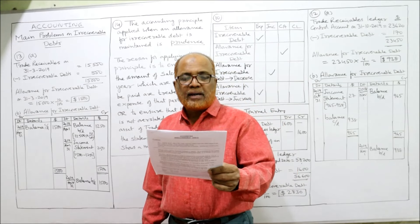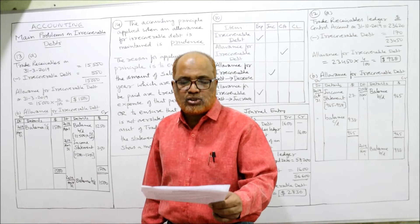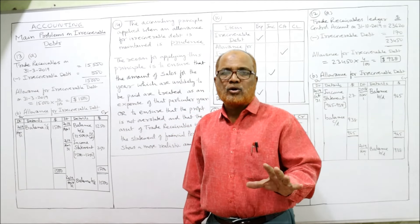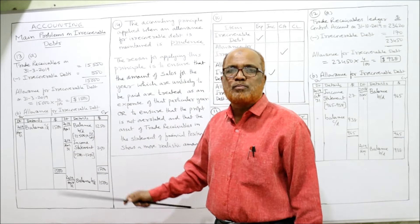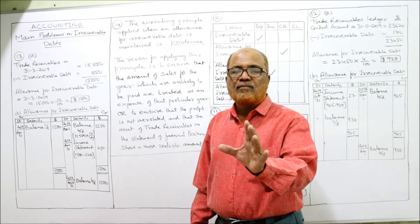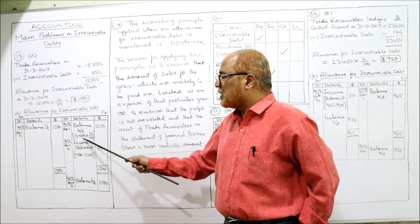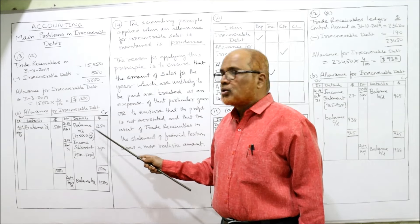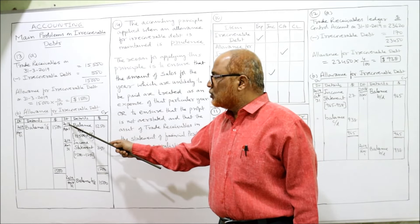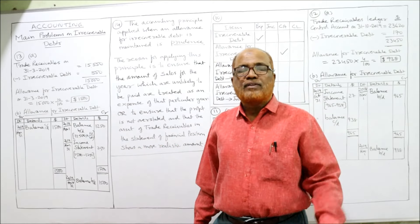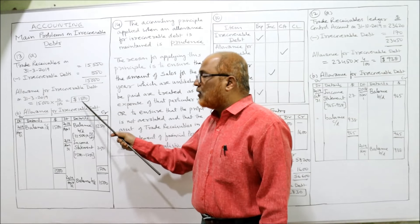Now for part two: prepare the allowance for irrecoverable debt account for the year ended 31st March 2019, balance the account, and bring the balance down on 1st April 2019. On the credit side of the allowance account, the balance brought down — beginning of the year — is $1,250, which is 10% of the opening trade receivables of $12,500. This is the opening allowance for irrecoverable debt as of 1st April 2018. End of the year, the allowance is $1,500; beginning of the year it was $1,250.